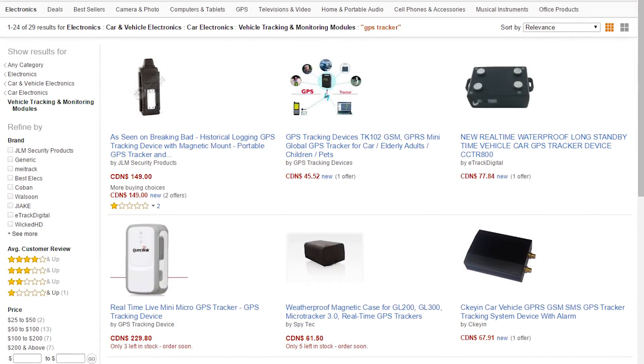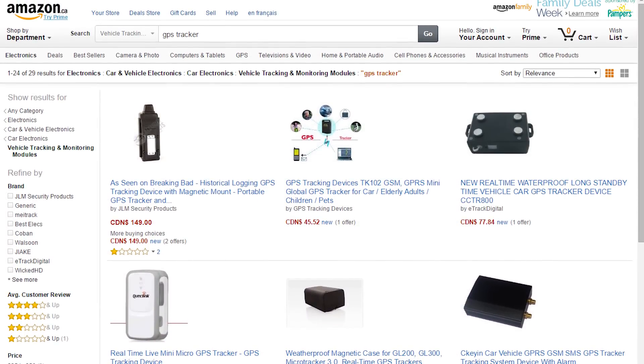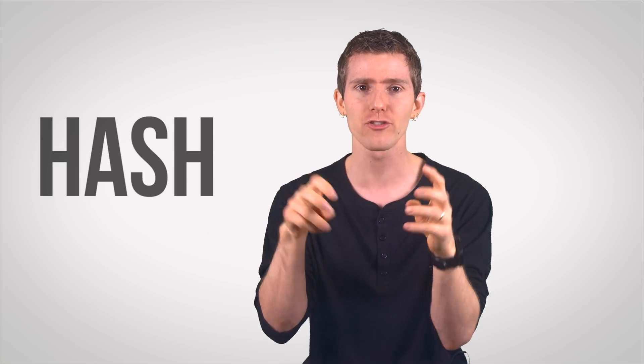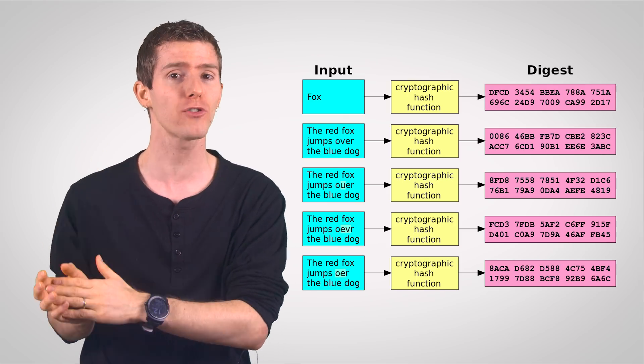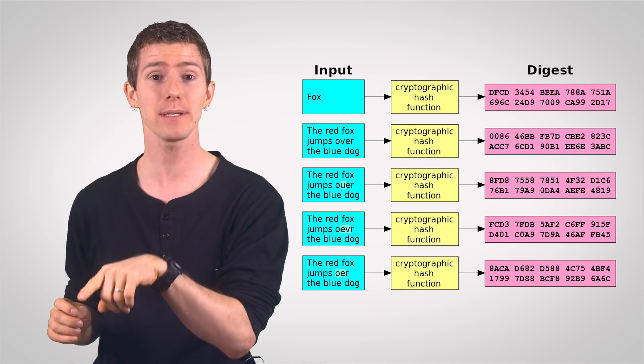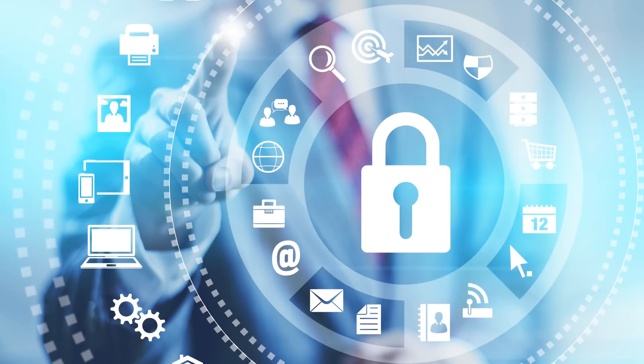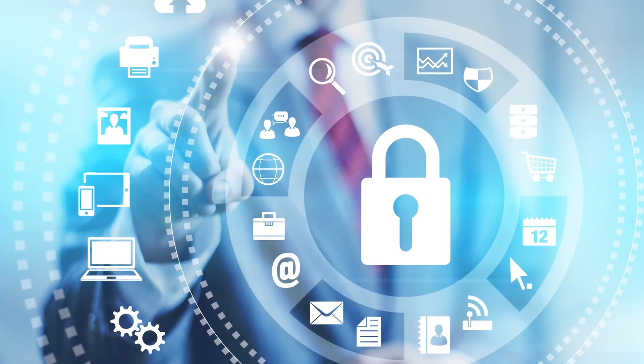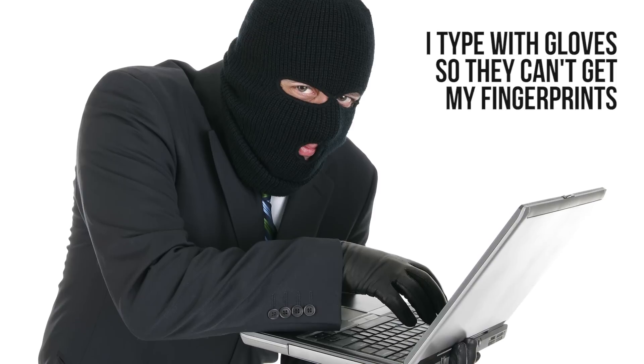Now, once the sensitive data actually arrives at its destination, there are a number of other encryption methods used to make sure it can sit on the computer or server safely. For example, you probably have a password and credit card number stored with Amazon. Web servers will often hash your passwords, meaning that they're converted into encrypted strings of text through a process that is extremely difficult to reverse and can't be unlocked with a key. With all that said, it is important to remember that no system of encryption is perfect, and experts in the field are constantly searching for weaknesses in encryption algorithms and devising new ones to outsmart hackers.